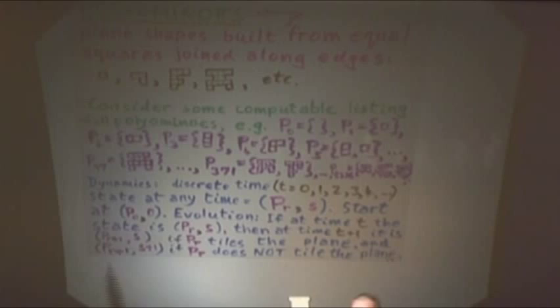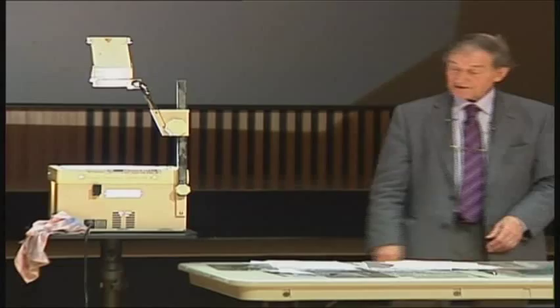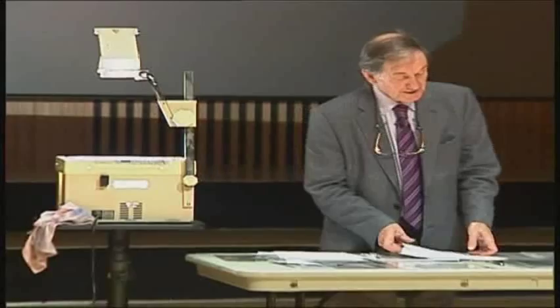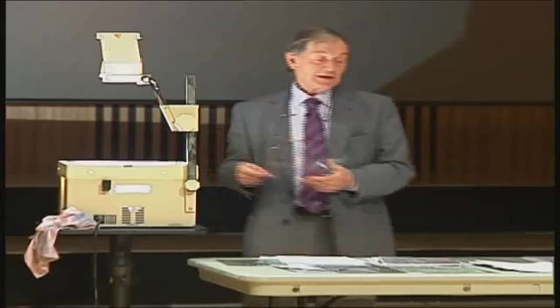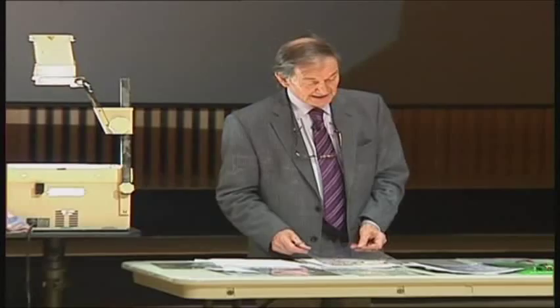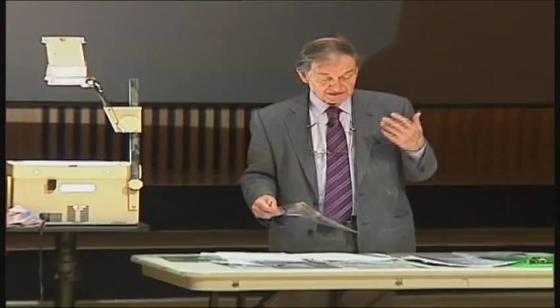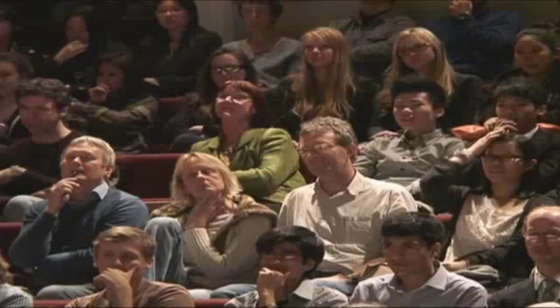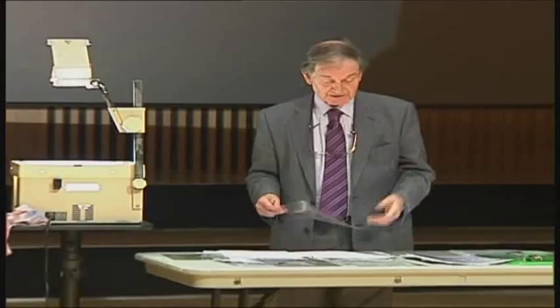The non-computable universe consists of two things: a set of polyominoes, and a natural number. Whether the natural number goes up or not depends on whether they will tile the plane. This universe has absolutely precise, deterministic rules about its evolution, yet there is no computer simulation of it. It's certainly quite possible to have a universe — if not a very realistic one — which is not computational. And my claim is that our universe is of that character, though the way in which it's of that character is something beyond the physics we know at the moment.